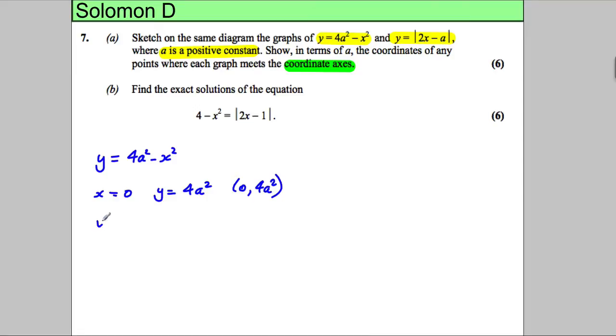Also, if y is equal to 0, we would be solving 0 equals 4a squared subtract x squared. Adding x squared to both sides, x squared equals 4a squared and square rooting, and this is important, x equals 2a or negative 2a. Don't, whatever you do, forget that the operation of taking square roots gives you a positive and negative answer.